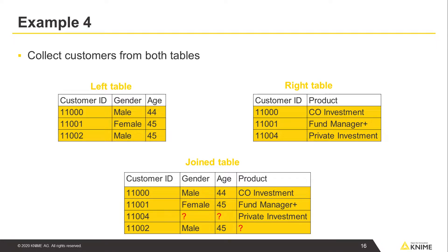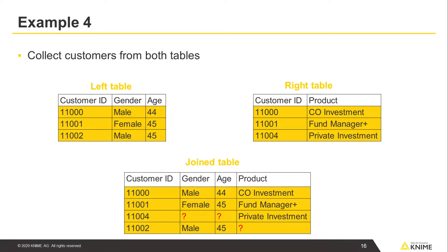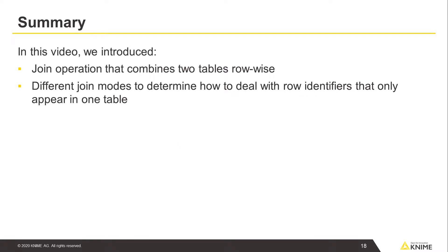Finally, let's collect information about as many customers as possible. In our joined table, we want to have all the customers from both tables. If for some customers personal or product data are missing, we replace this information with missing values. The join table then includes all the rows from both tables. This join mode is called full outer join. In this video, we introduced the join operation that combines two tables row-wise, and the different join modes to determine how to deal with row identifiers that only appear in one table.